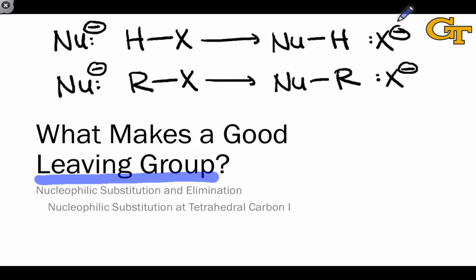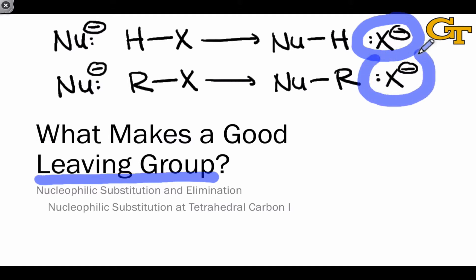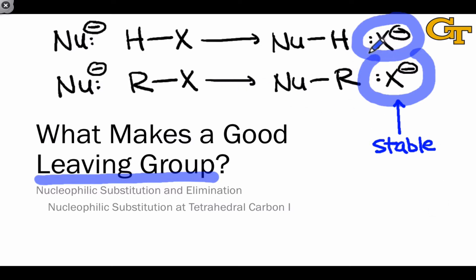The key here is recognizing that from the leaving group's perspective, the same species is generated in the products. In both cases, we're seeing X⁻ on the product side. Good leaving groups are those for which X⁻ is a stable molecule in the thermodynamic sense. Thanks to the conjugate seesaw, we know that if X⁻ is a stable molecule, then HX, its conjugate acid, must be acidic.